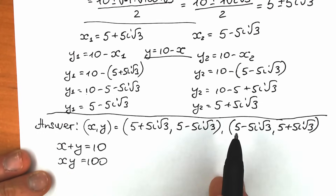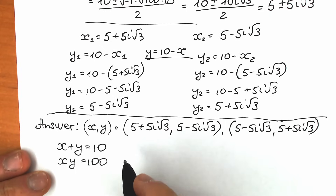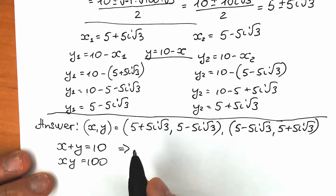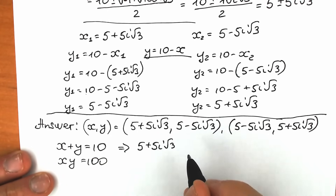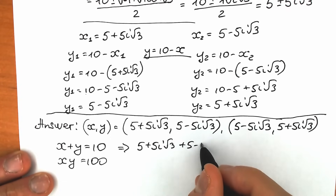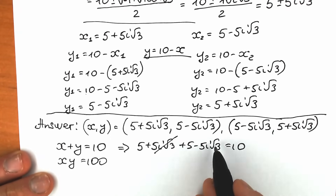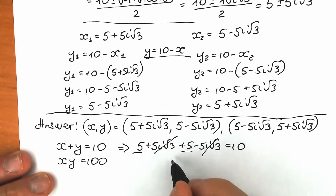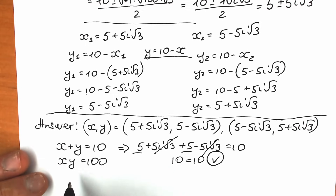Let's check this pair. For addition: (5 + 5i√3) + (5 − 5i√3) equals 10. The complex parts cancel, and we get 5 plus 5 equals 10. So 10 equals 10 — addition checks out.